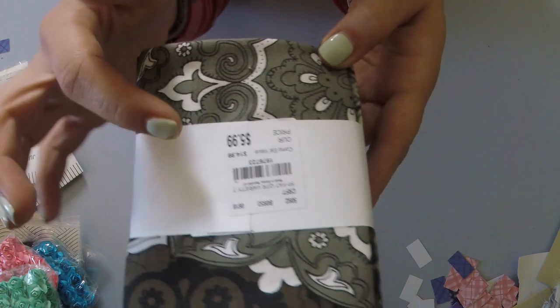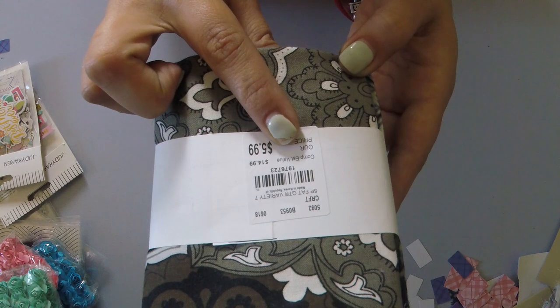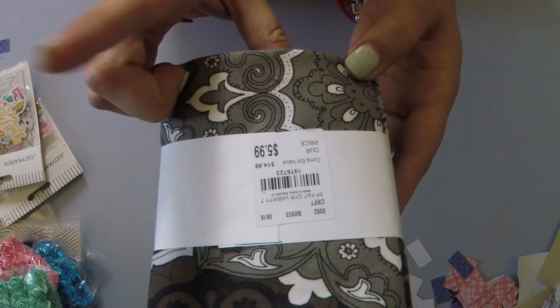So for this particular set, the number is a one nine seven six seven two three.